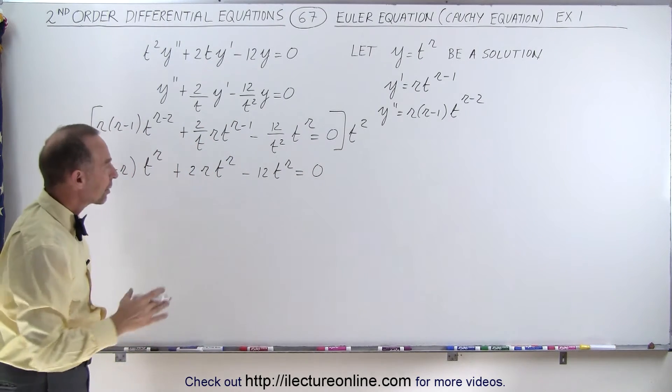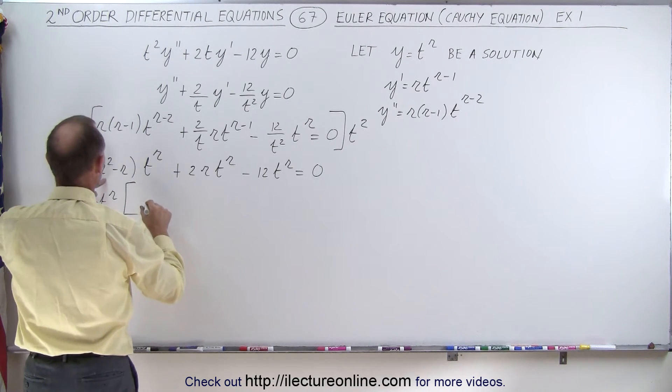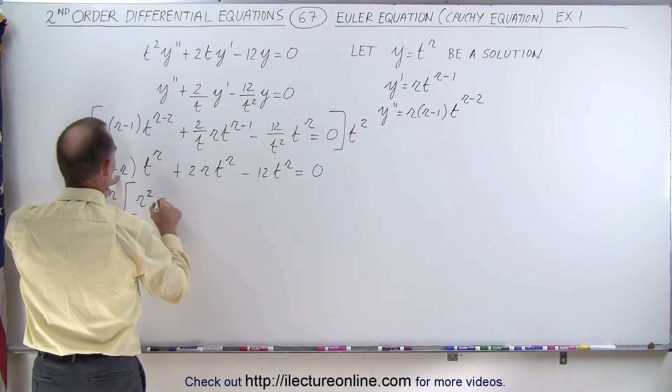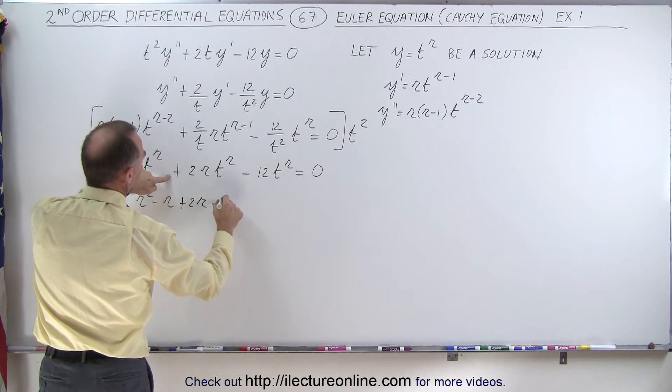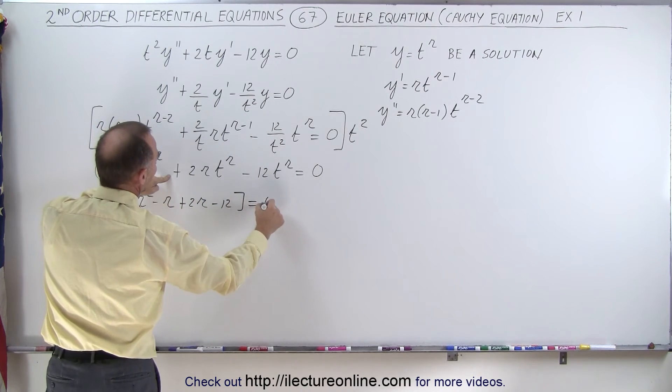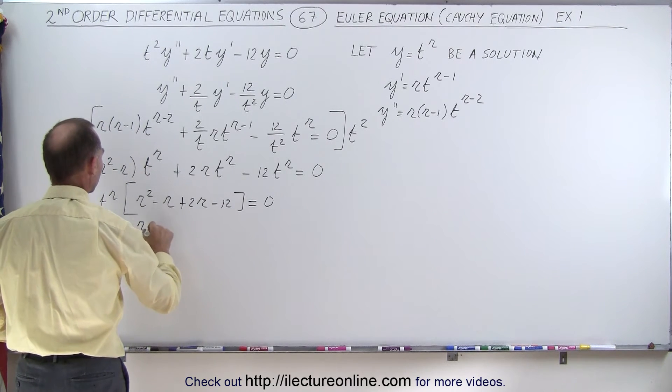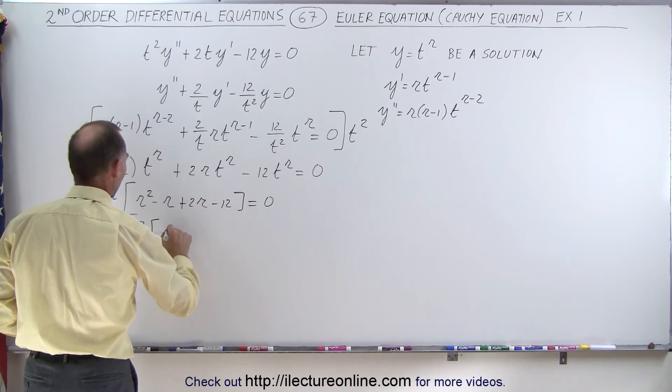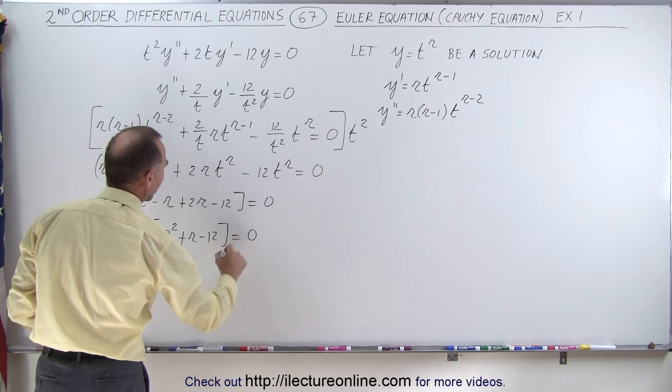We now see that we can factor out a t to the r, and what we have left is an r squared, a minus r, a plus 2r, and a minus 12, and that equals zero. Simplifying this, we end up with t^r times (r² + r - 12) = 0.